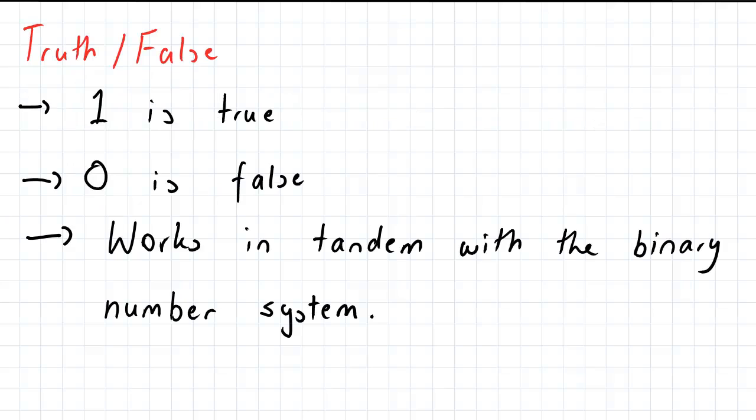So the first thing that we need to establish is what we call truth-false statements. So in the digital system, one is termed to be true and zero is termed to be false or any other binary kind of opposite.